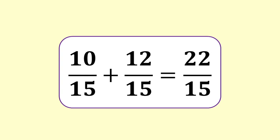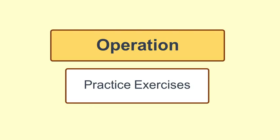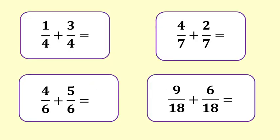For now we will leave our answers in raw form. Any simplification will come in the presentation stage and is covered in another video. Here are four fraction addition problems for you to try yourself. The worked answers will be at the end of the video. Leave the answers in raw form: 1 quarter plus 3 quarters; 4 sevenths plus 2 sevenths; 4 sixths plus 5 sixths; 9 eighteenths plus 6 eighteenths.